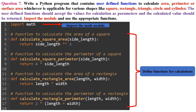Question 7: Write a Python program that contains user-defined functions to calculate area, perimeter, or surface area (whichever is applicable) for various shapes: square, rectangle, triangle, circle, and cylinder. The user-defined functions should accept the values for calculation as parameters and return the calculated value. Import the module and use the appropriate functions. In line 1, the program starts by importing the math module, which is used for mathematical calculations like pi (math.pi) and exponentiation (**).